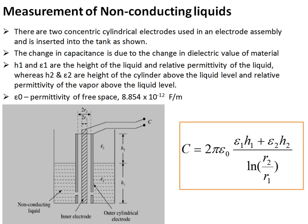For non-conducting liquids, two concentric cylindrical electrodes are used. Here, 2r₂ is the inner diameter of the outer cylinder and 2r₁ is the outer diameter of the inner cylinder. h₁ and ε₁ are the height and relative permittivity of the liquid, while h₂ and ε₂ are the height and relative permittivity of the vapor or air above the liquid level. As the liquid level rises, h₁ increases.